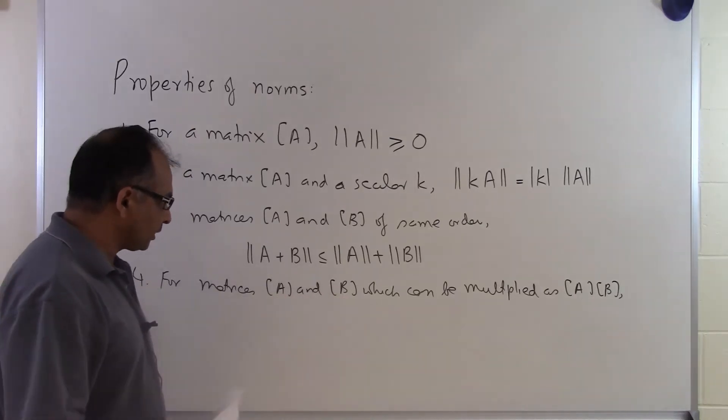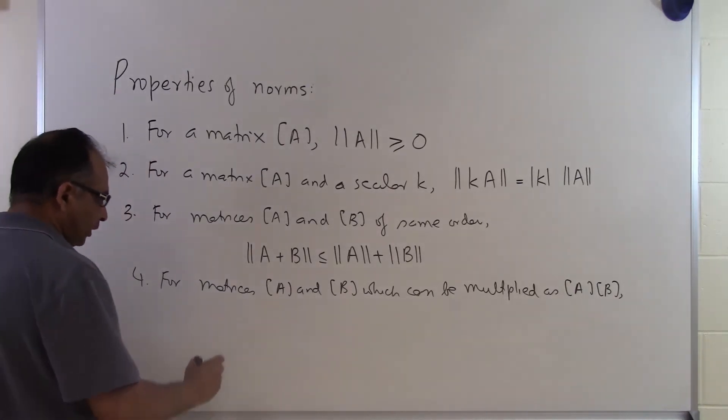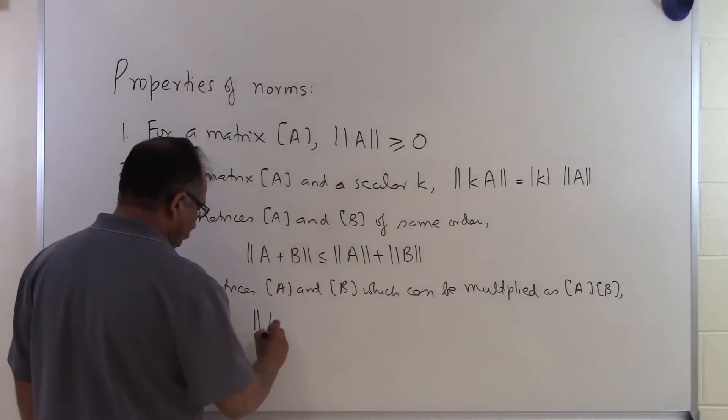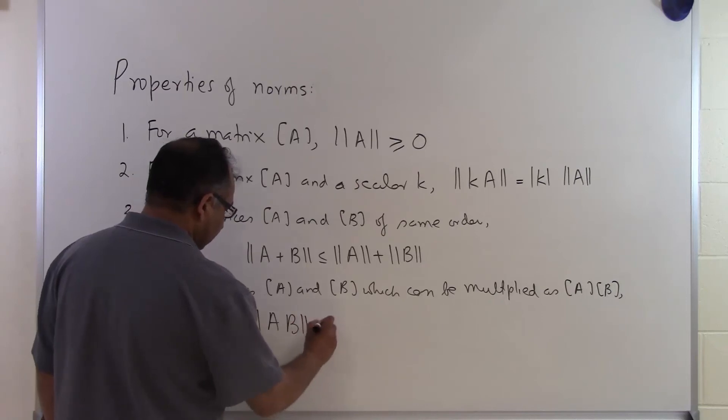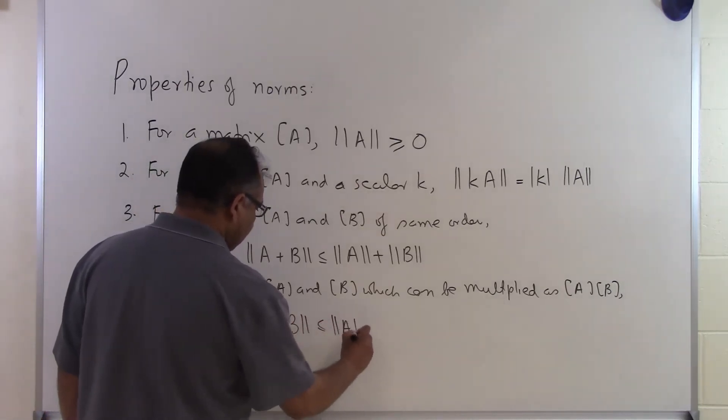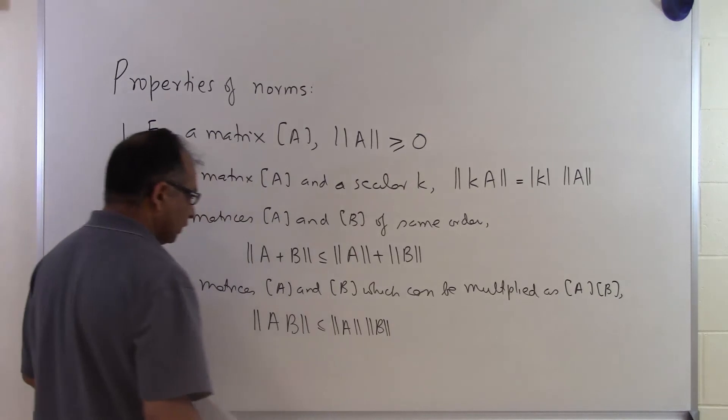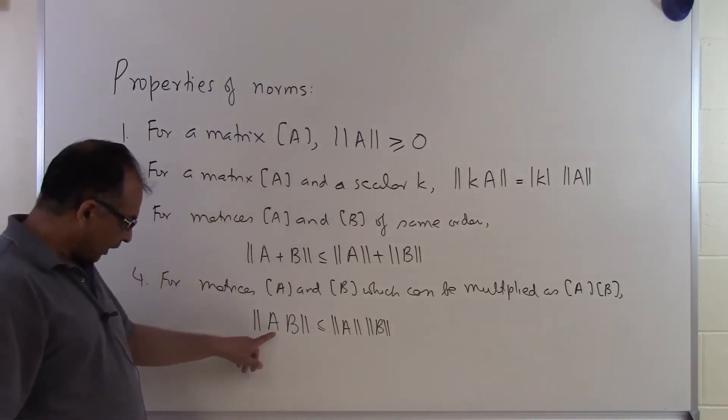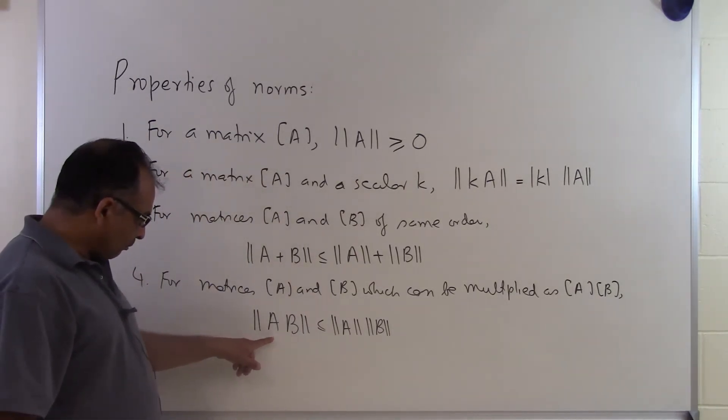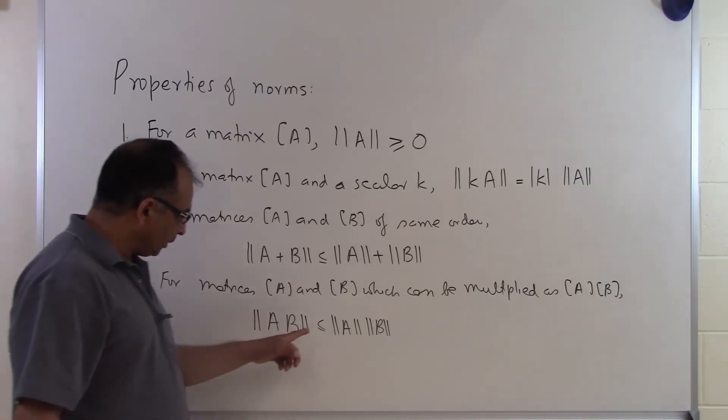If that is the case then there is a property of the norm which says the norm of A times B will be less than or equal to the norm of A times the norm of B. Which means that if I take the two matrices A and B, multiply them together and then I find the norm, that number will always be less than or equal to the norm of A times the norm of B.